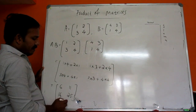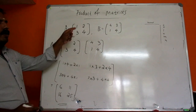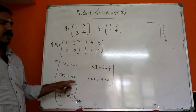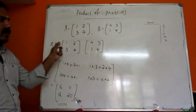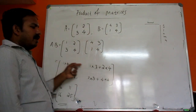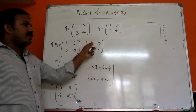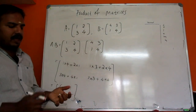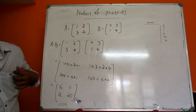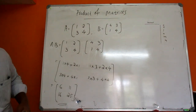That is matrix multiplication — this is how we multiply them. Row into column: first row first column, first row second column, second row first column, second row second column, and so on for each row and column combination.